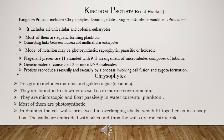Now let us start with kingdom Protista, given by Ernst Haeckel. It includes all unicellular eukaryotes that live in colony form. These are aquatic and are the connecting links between Monera and multicellular eukaryotes. Kingdom Protista shows both autotrophic and heterotrophic modes of nutrition.